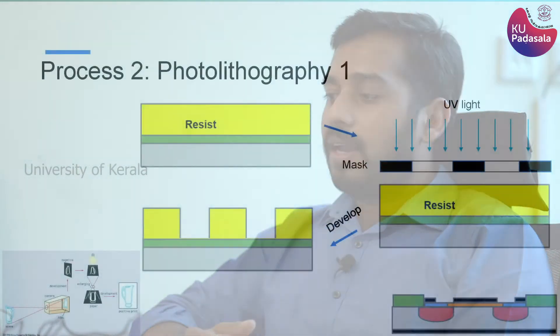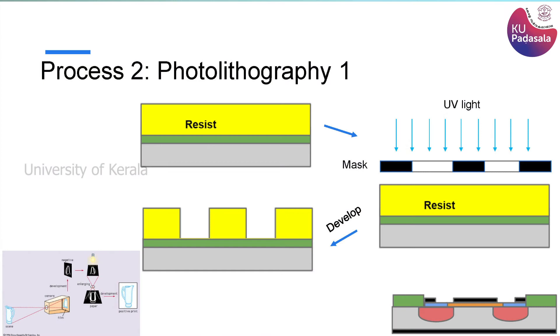The second process being done here is called photolithography. In the entire process of fabricating a microfabricated device, you may have to do photolithography several times. So I am coding this photolithography step as photolithography one.